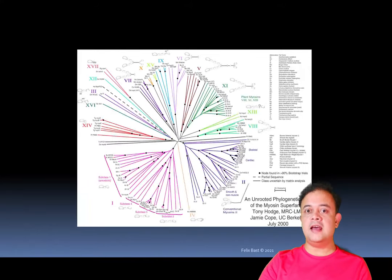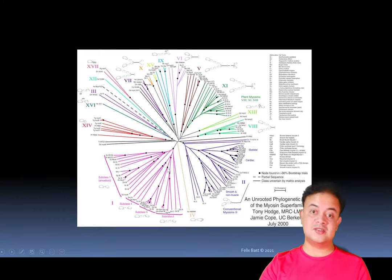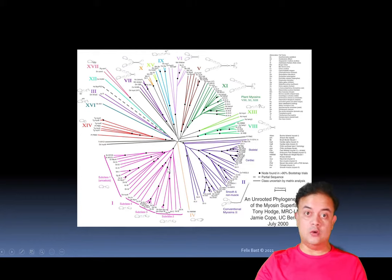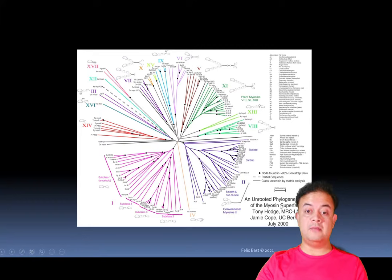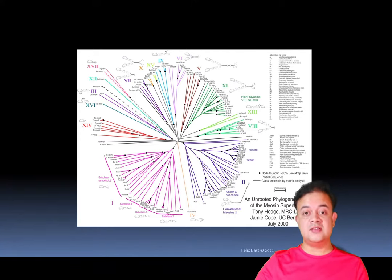Unrooted trees are also perfectly fine. Some of the most popular trees are unrooted — for example, this circular representation of various eukaryotes based on the myosin superfamily protein. You can make this kind of tree with unrooted representation. Unrooted or rooted — both are popular — but the main difference is that unrooted doesn't make an explicit reference to the root or the directionality of evolution.